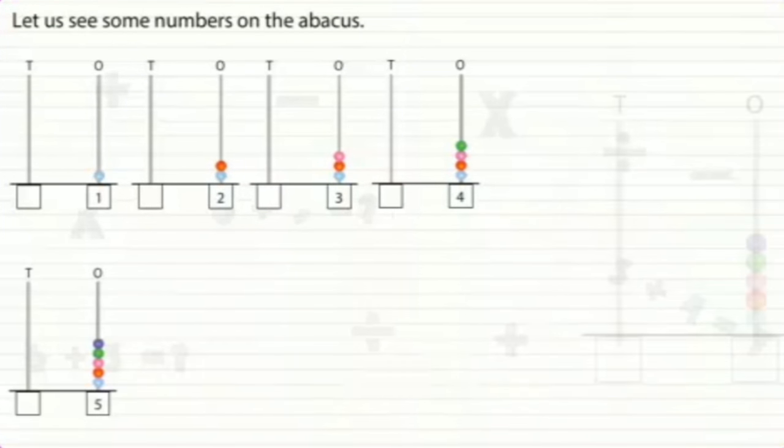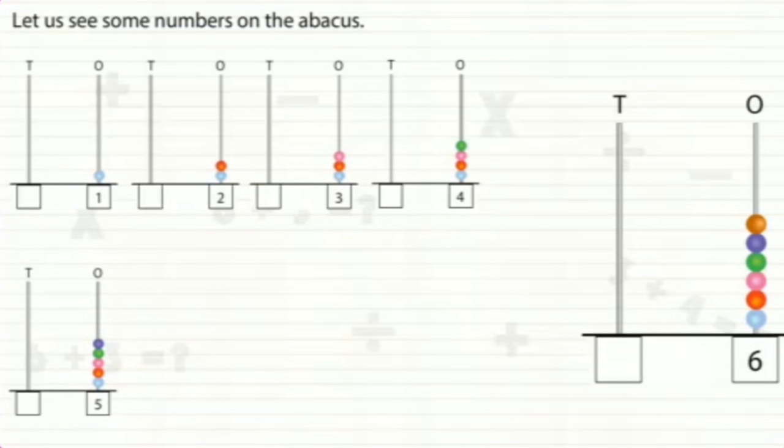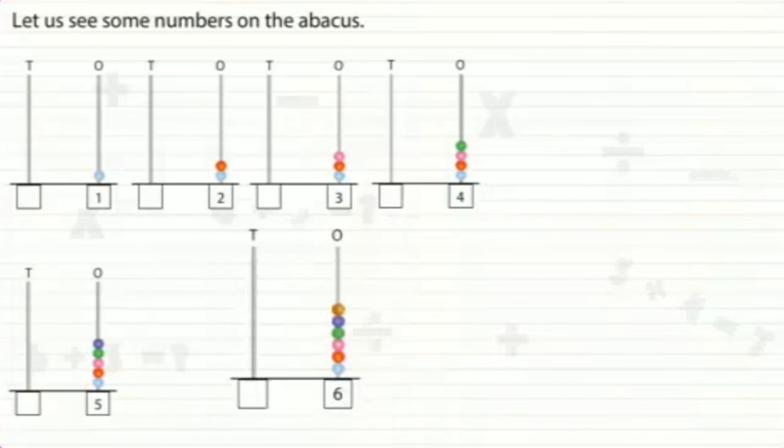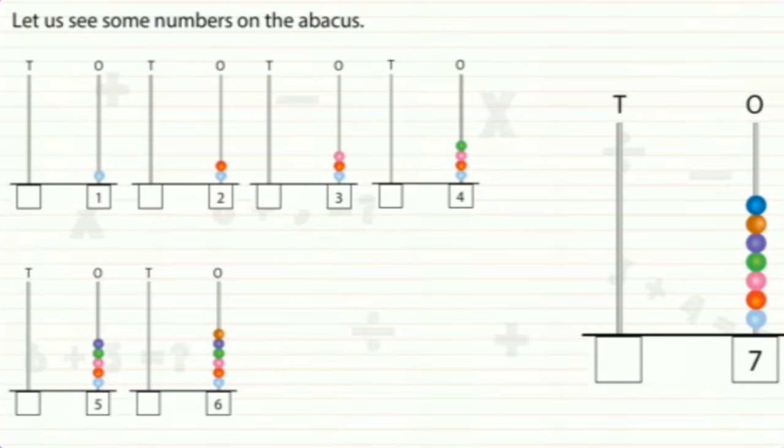For 6, we put 6 beads in the ones spike. For 7, we put 7 beads in the ones spike. For 8, we put 8 beads in the ones spike.